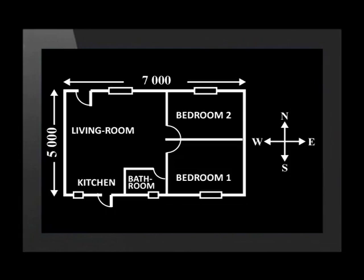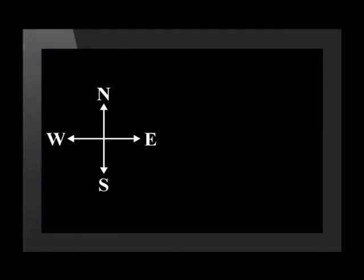Also, take note of the compass direction points. All plans should have a compass to show how the building should be placed on the land. The compass directions usually look like this, with north pointing up, south pointing down, west is on the left and east on the right.